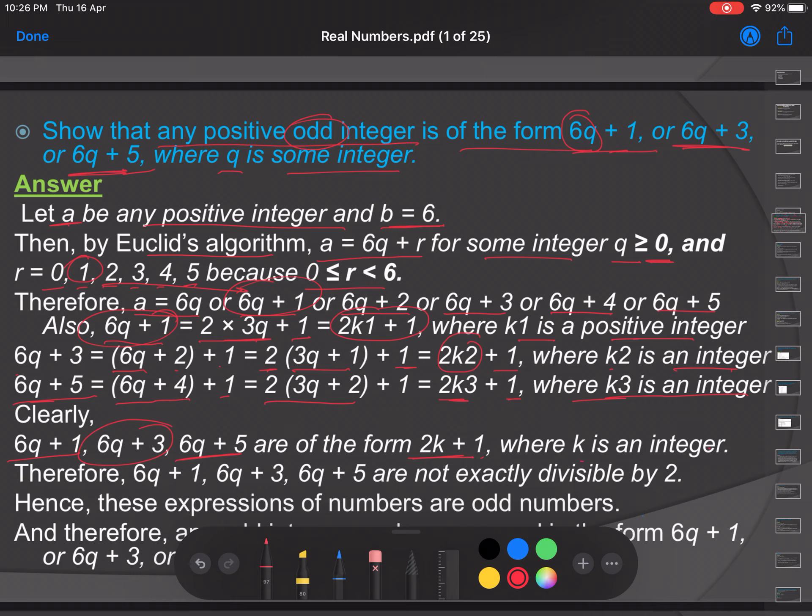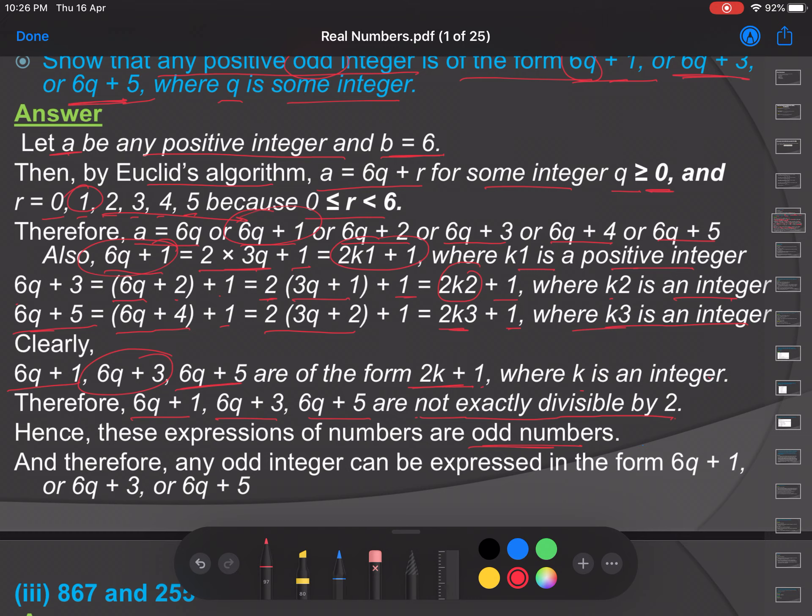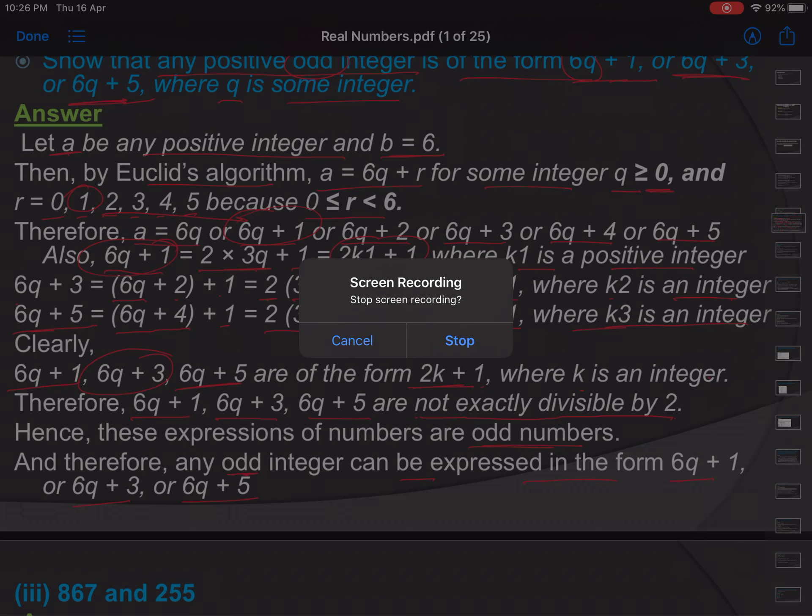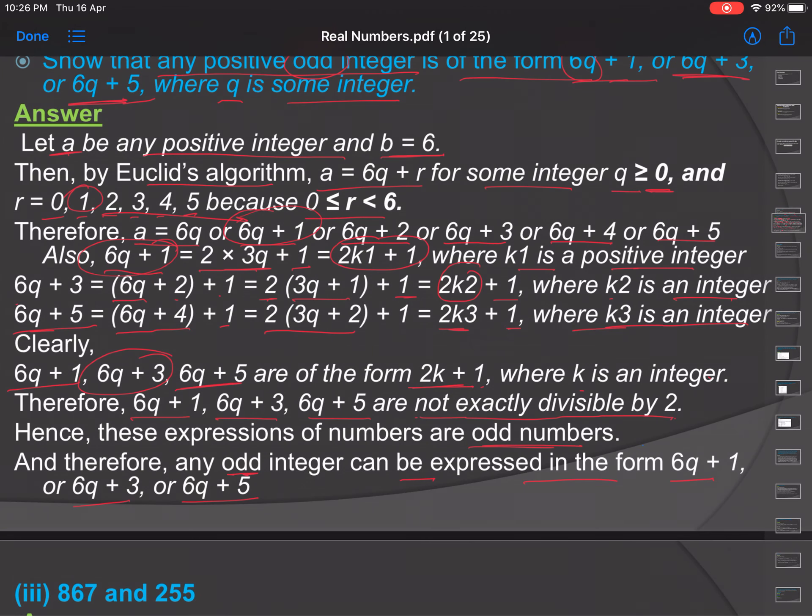Hence these expressions of numbers are odd integers. And therefore any odd integer can be expressed in the form 6q plus 1, 6q plus 3, or 6q plus 5. This is another example of Euclidean lemma.